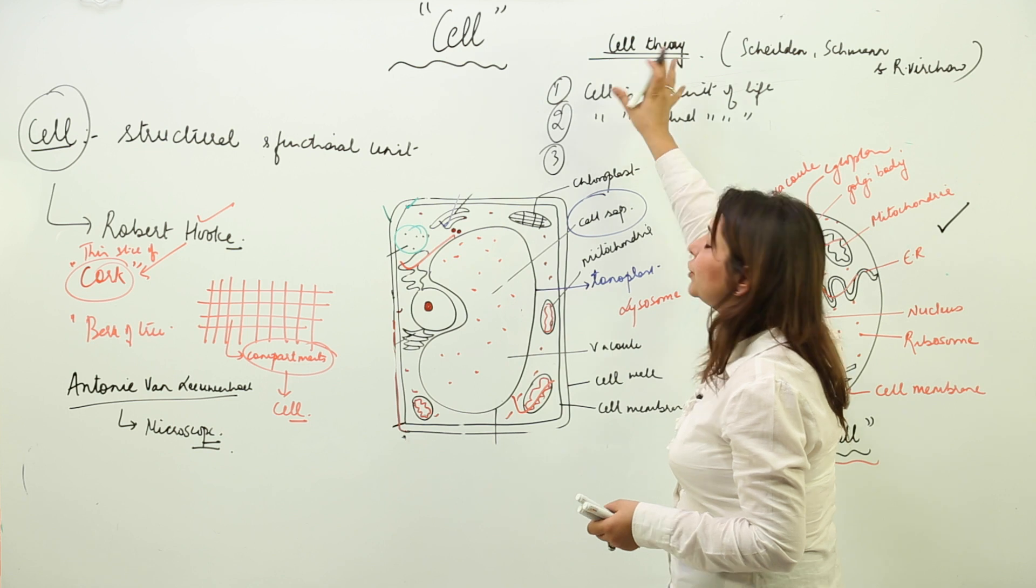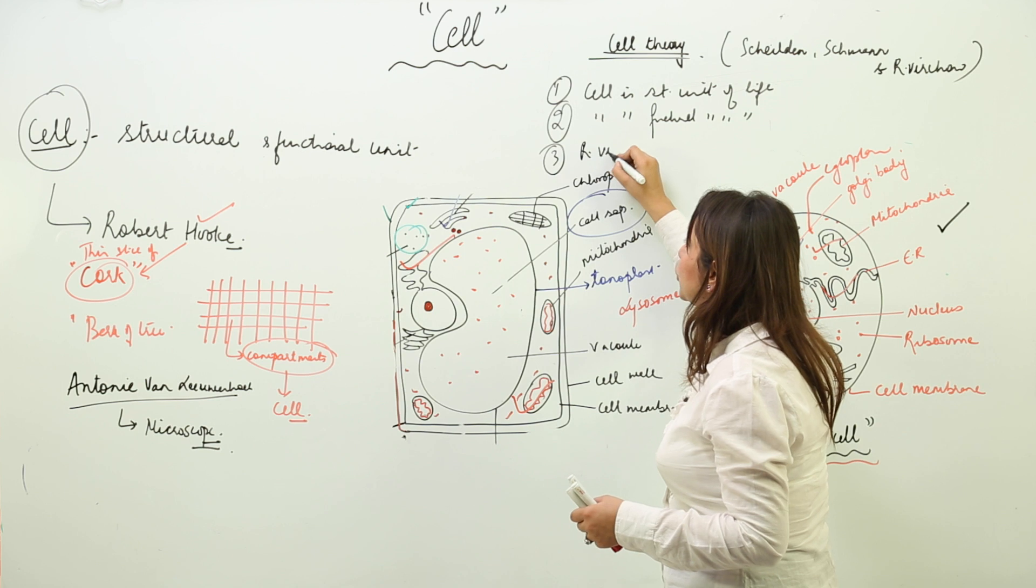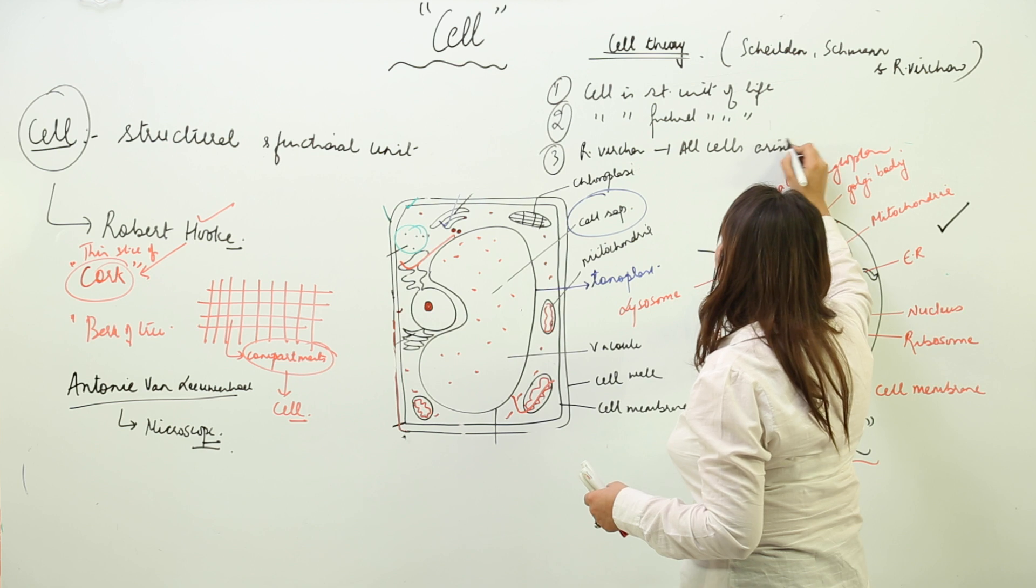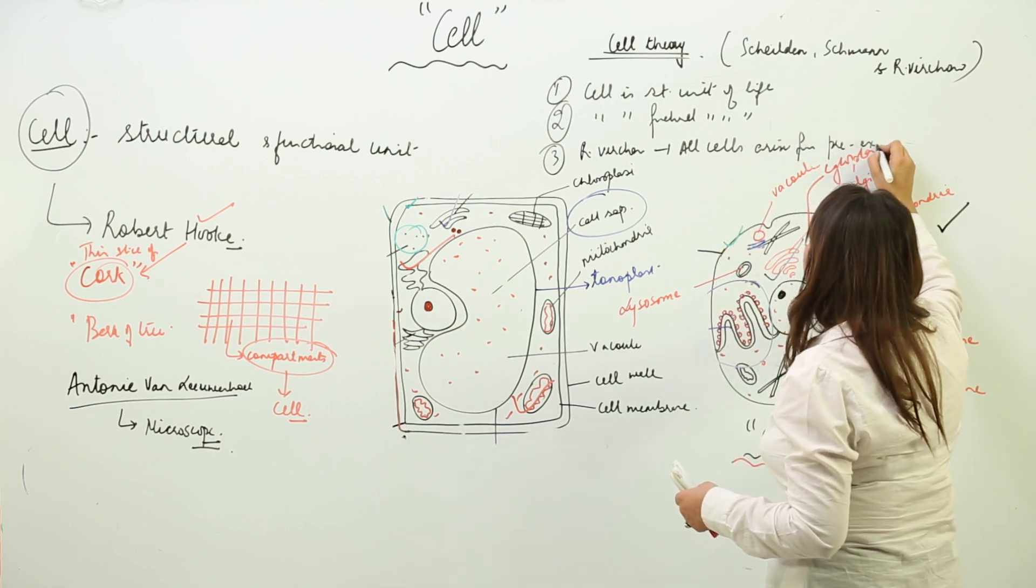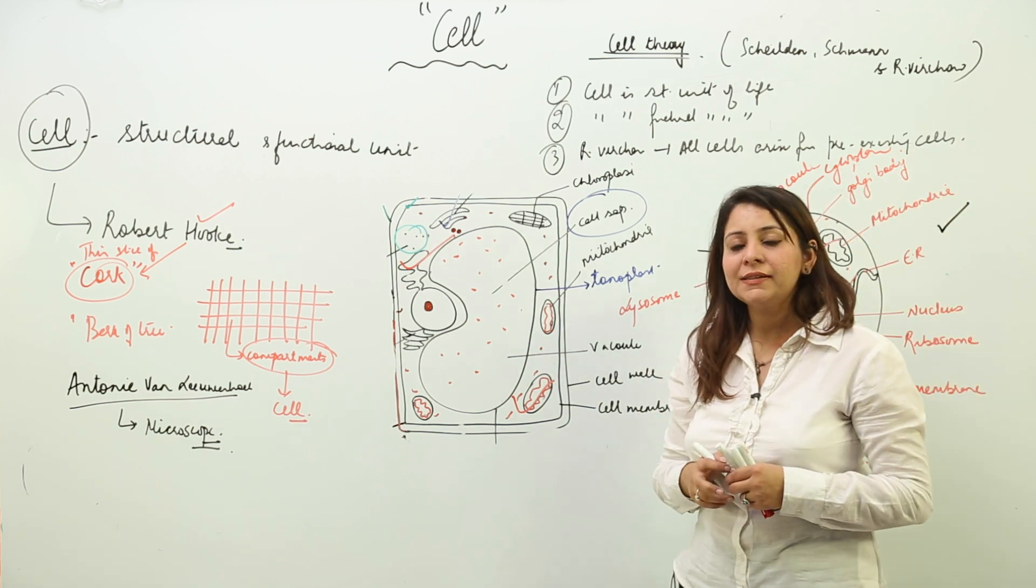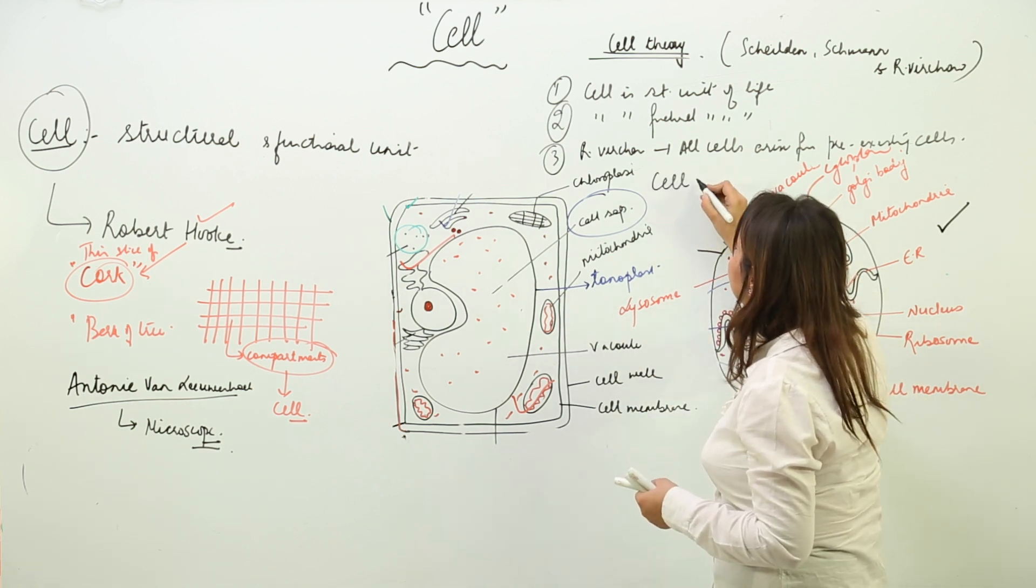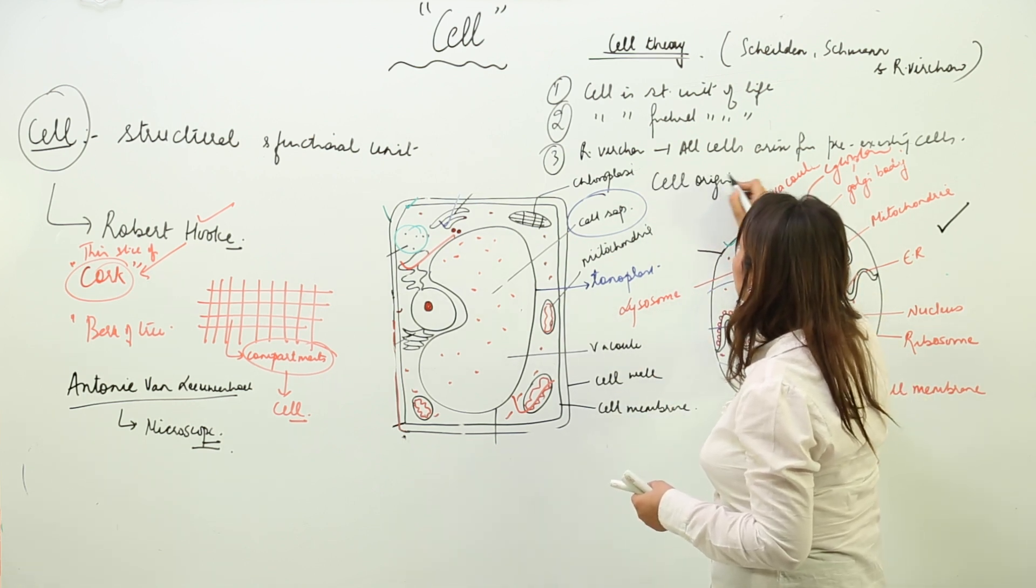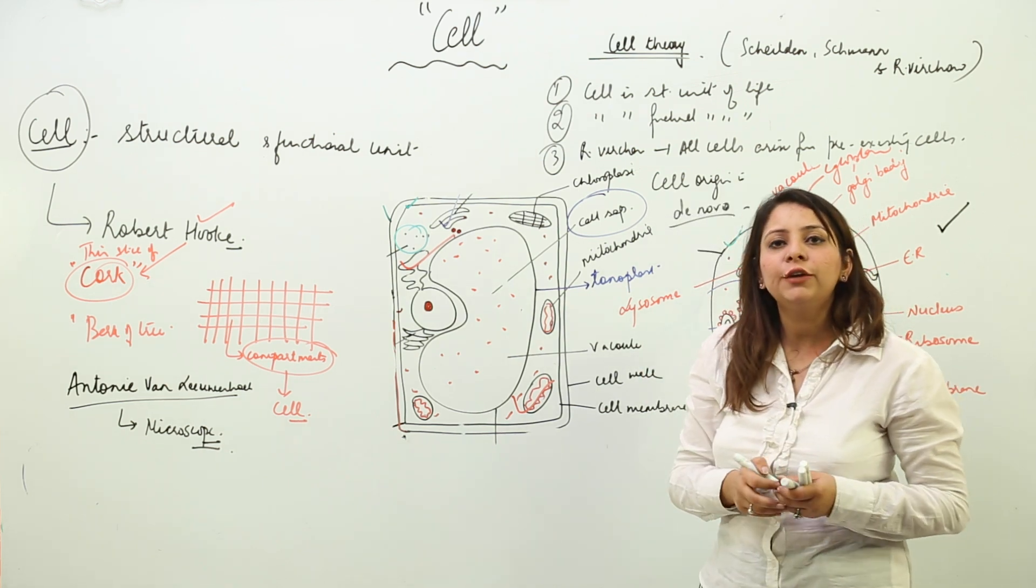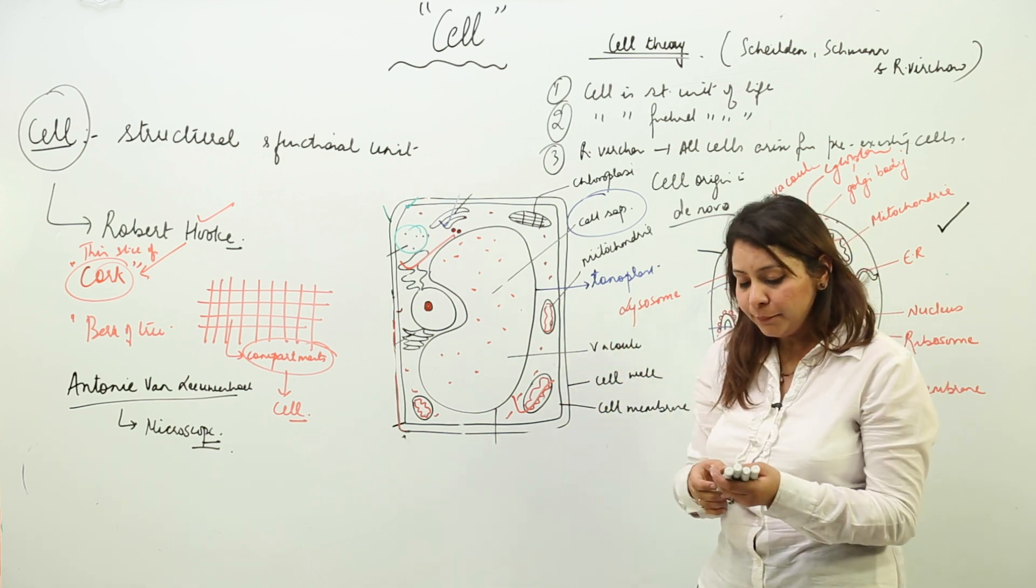The function is performed at the cellular level only. As far as their origin was concerned, that was given by Rudolf Virchow. He added: all cells arise from pre-existing cells. Their origin is not known, or we can also say that cell origin is de novo, meaning not known. They just originate from the pre-existing ones.